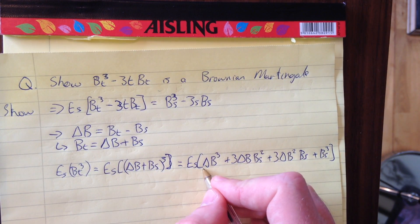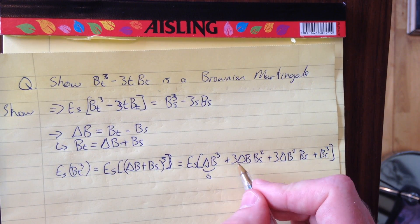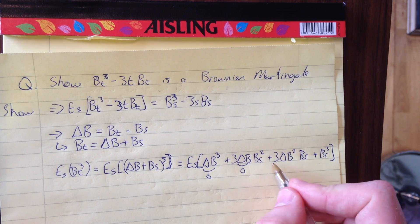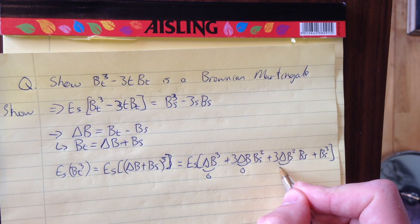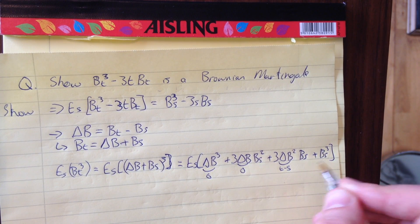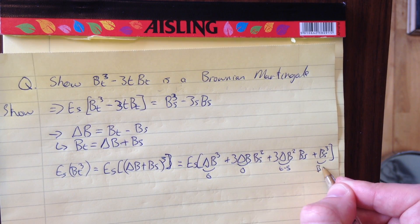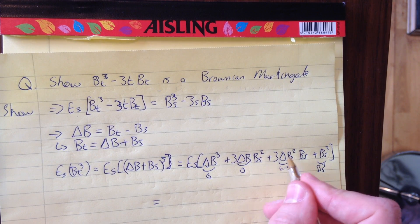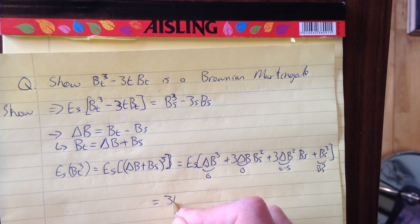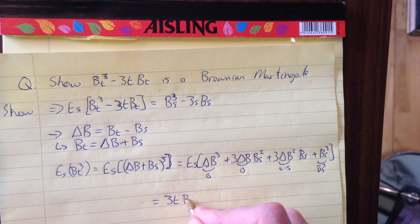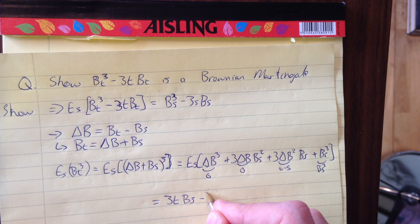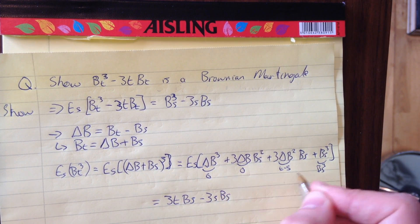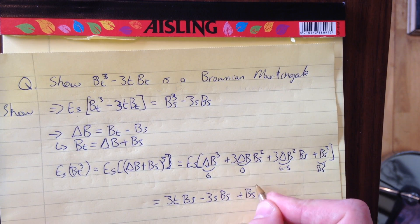So this term goes to 0, this term goes to 0 because delta B is 0, this gets replaced by T - S, and we take the expected value. This stays as B_s^3. So this equals 3TB_s - 3SB_s + B_s^3.